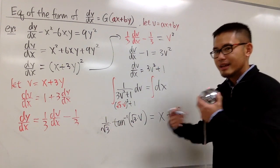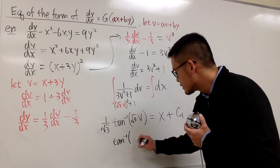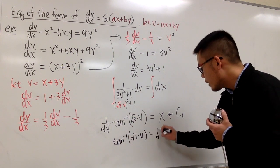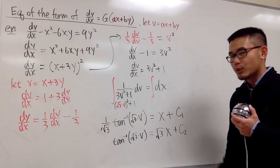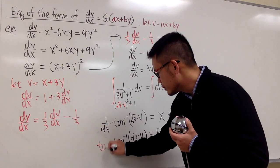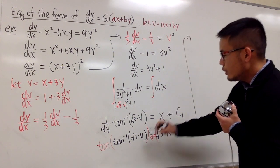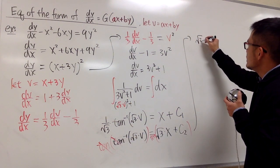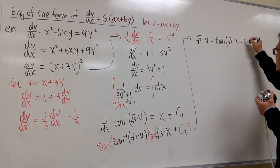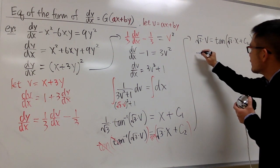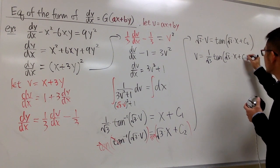I want to solve for v and then get y. Multiply everything by √3, so we have arctan(√3·v) = √3·x + √3·C₁. Let √3·C₁ = C₂. Taking tangent of both sides cancels the arctan, giving √3·v = tan(√3·x + C₂). Dividing by √3: v = (1/√3)·tan(√3·x + C₂).